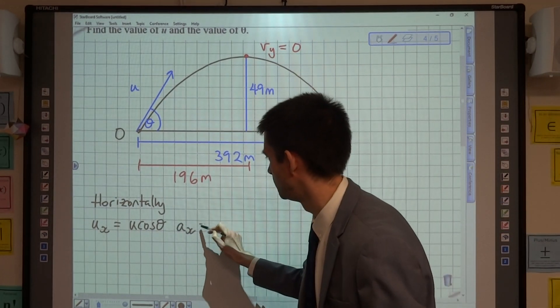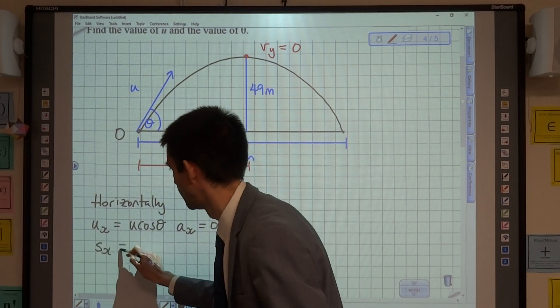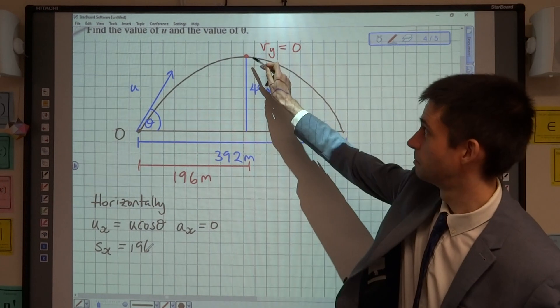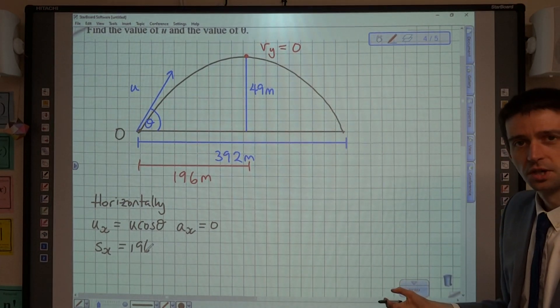We know that the acceleration is zero. We know that the displacement is 196, because remember we're looking at this point in time here. And we don't know anything else horizontally at this stage.